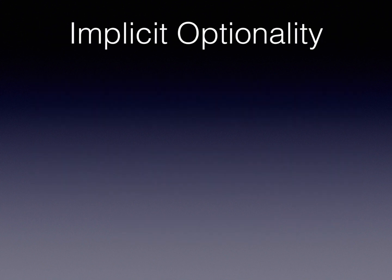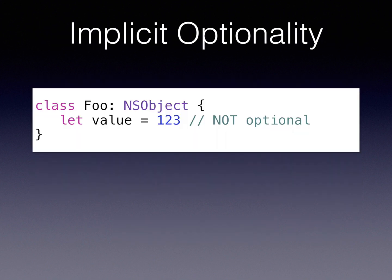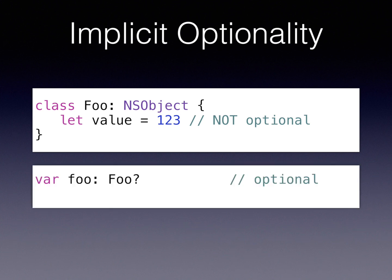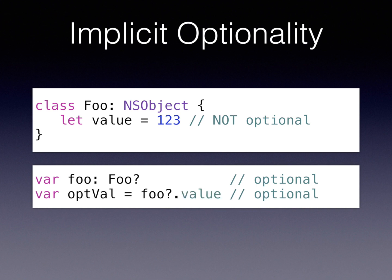Something to be aware of regarding implicit optionality: if you have a class with a property that's not optional, but you have an optional variable of that class type, the result of an optional chain will always also be optional. Anything optional in your chain makes the entire thing optional - which is great because you can then use if-let to do something with the result only if it's not nil.